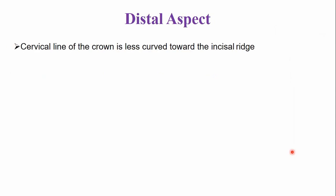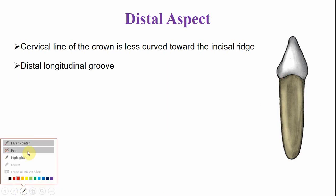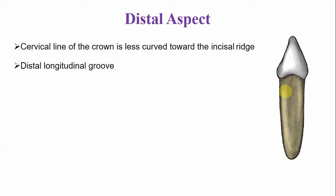From the distal aspect, the cervical line is less curved, and this feature is similar in all teeth on the distal aspect — the curvature of the cervical line is less than it is on the mesial side. On the root surface, a longitudinal developmental groove is present.